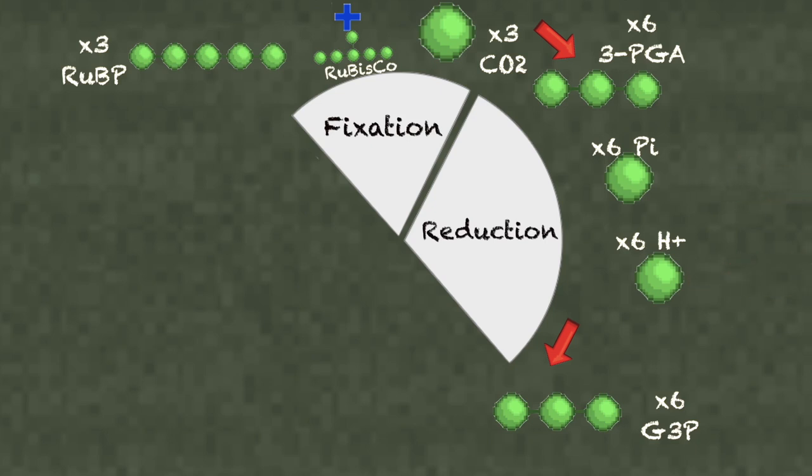One G3P molecule exits the cycle as it can be used for other organic molecules.